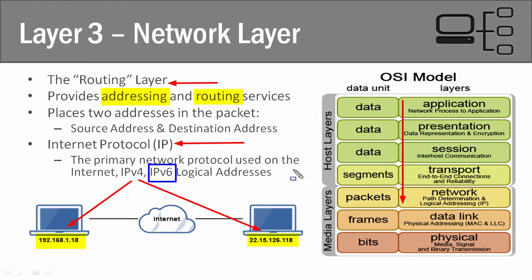That's what layer 3 is all about. Now we're going to jump down to layer 2, the data link layer, and talk about physical addressing. Layer 3 deals with our IP addresses — our logical addresses — and layer 2 deals with our MAC addresses, our physical addresses. These two layers are all about the addresses on our system: an IP address assigned by the network, and the physical MAC address burned into our network interface card.